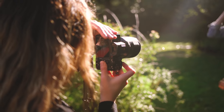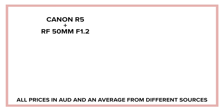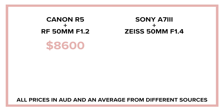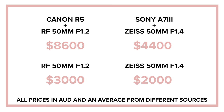Before we start, let's talk about money. The R5 with the RF 50 f1.2 totals to $8,600. The a7 III with the Zeiss 50 f1.4 totals to about $4,400. The RF 50 f1.2 on its own is about $3,000, and the Zeiss 50 f1.4 on its own is about $2,000.